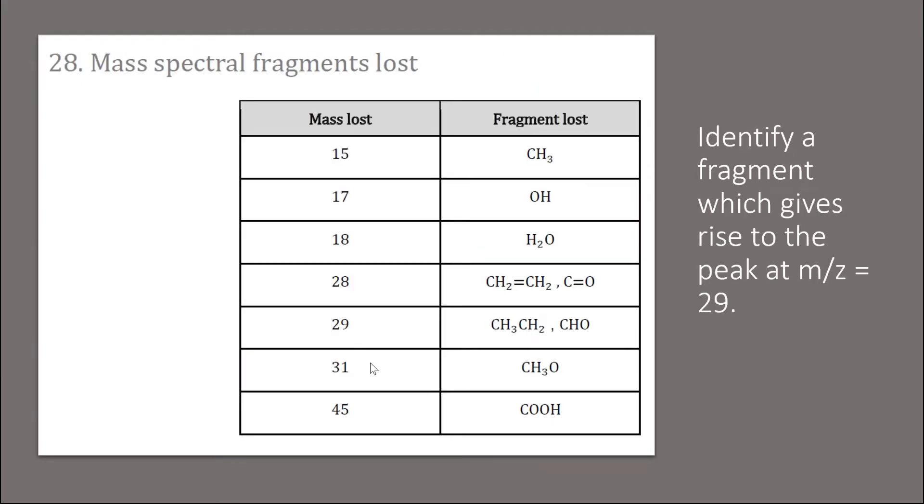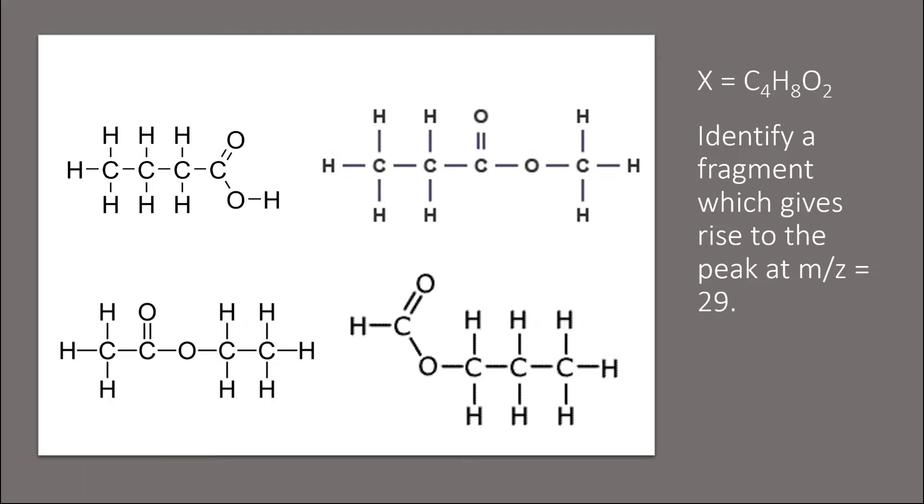To identify a certain peak in mass spectrum, we can use this table in the data booklet. We can also do it without the data booklet. Let's draw some isomers of C4H8O2. These are not all the isomers, I'm just drawing the carboxylic acid and all the esters.